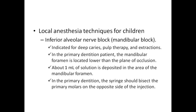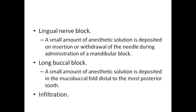One ml of the solution is deposited in the area of the mandibular foramen. In the primary dentition, the syringe should bisect the primary molar on the opposite side of the injection. Then comes the lingual nerve block: a small amount of anesthetic solution is deposited during insertion or withdrawal of the needle during the administration of the mandibular block. Then is the long buccal nerve block: a small amount of anesthetic solution is deposited in the buccal fold. There is an increased probability of anesthesia failure using local infiltration for pulp therapy and extraction procedures.